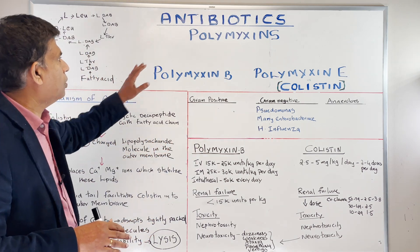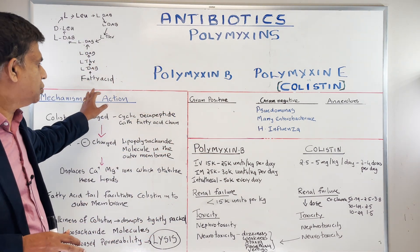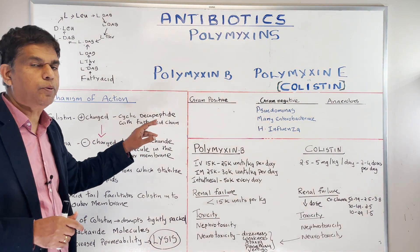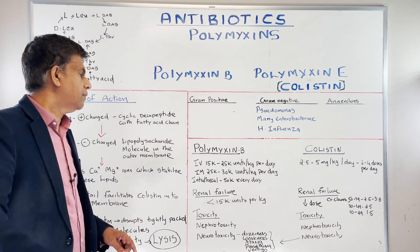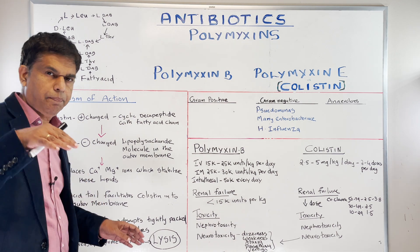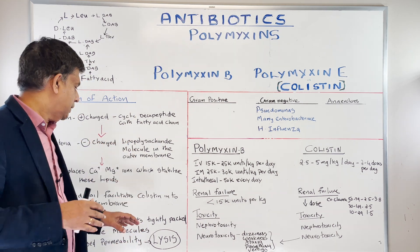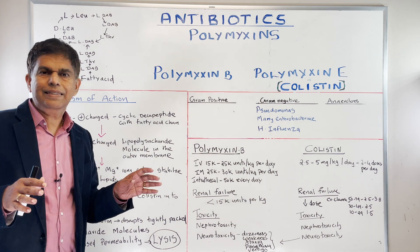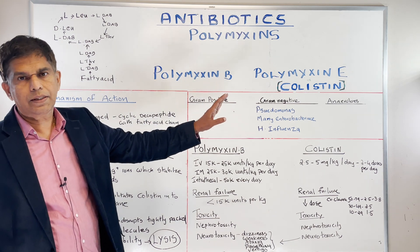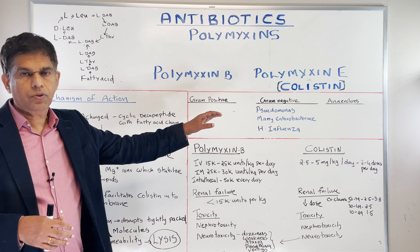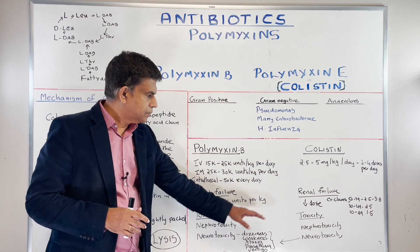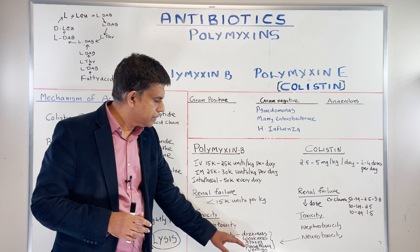To summarize: polymyxin B has a positively charged cyclic decapeptide with a fatty acid chain that binds to the negatively charged LPS lipopolysaccharide — found only in gram negative bacteria. It displaces calcium and magnesium, destabilizes the LPS, the fatty acid tail penetrates the membrane, the bulkiness disrupts the LPS molecules, increases permeability, and lysis occurs. No coverage for gram positive since it lacks lipopolysaccharide; excellent gram negative coverage. I should also mention toxicity: both drugs share nephrotoxicity and neurotoxicity. Neurotoxicity can present as dizziness, weakness, ataxia, paresthesia, and vertigo.